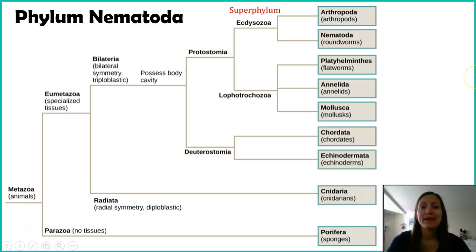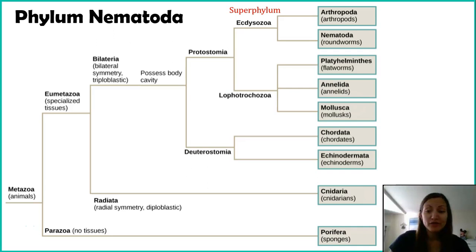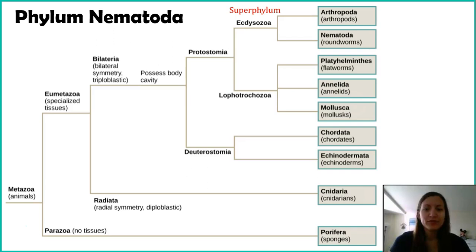Now that we've covered both Periphera and Cnidaria, you can follow along on this phylogenetic tree. We went to the Parizoa, the beside animals — our sponges — which are animals, but not quite. They don't have a lot of common characteristics with animals. Then we went into the Eumetazoa, our true animals, and looked at our radial organisms, the Cnidarians. Now we're going to follow this phylogenetic tree to our bilateral organisms.